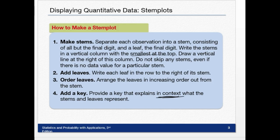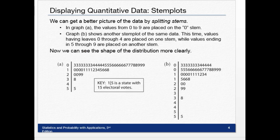Here's another example—we get a better picture of the data by splitting the stems. Sometimes we need to split them. In graph A, the values of zero to nine are placed on the zero stem, but notice there's tons of data on the zero stem and there's more to this shape than we would see.